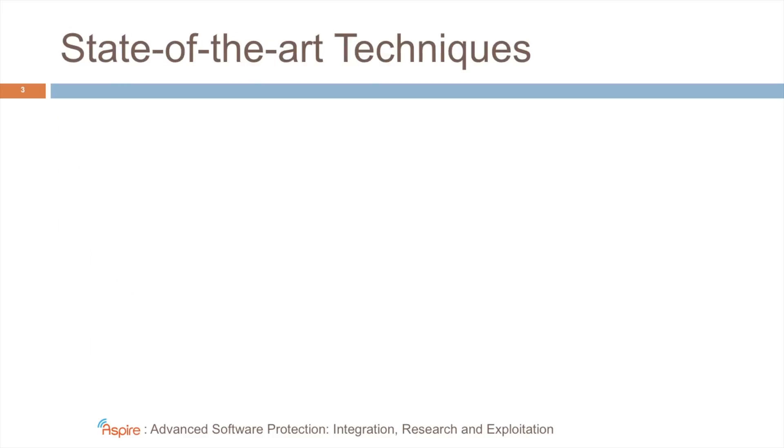At the start of the project, we started to re-engineer and re-implement some state-of-the-art techniques. The main reason for doing so was to have a good starting point in the project to develop more advanced techniques and to study the composability and integration of many techniques, including some existing ones. So these existing ones were XOR masking, where a variable V will occur as a variable V XOR P in a program.